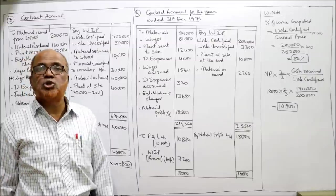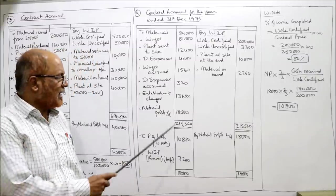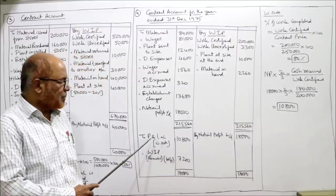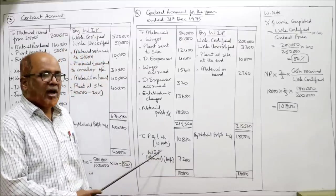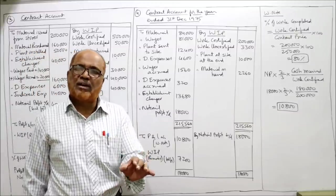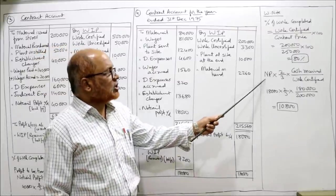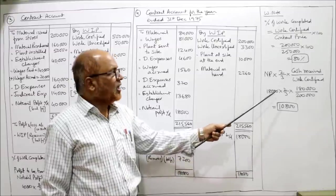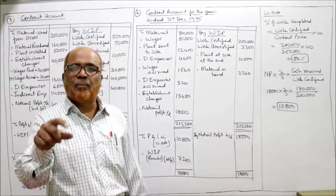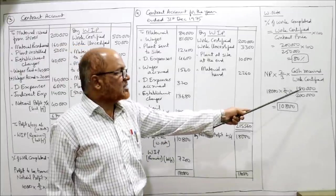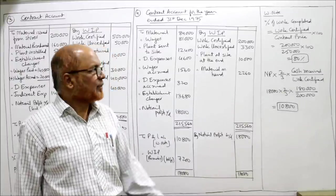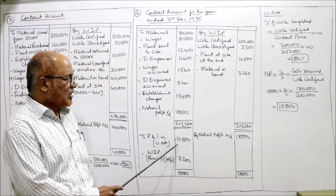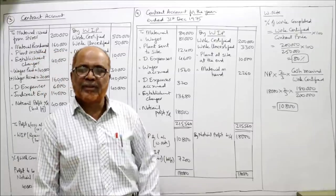In the contract account, debit side takes: material, wages, wages accrued, direct expenses, direct expenses accrued, and establishment charges. Credit side takes: work certified, work uncertified, plant at site at year-end, and material on hand. Credit side total = 2,15,560. Subtracting all debit items gives notional profit = 18,000 (carried down, brought down).